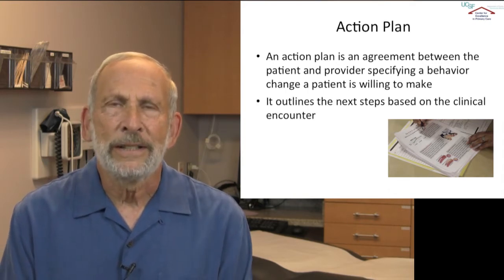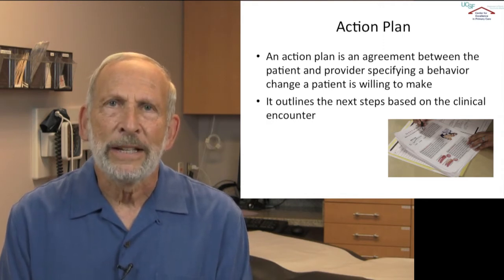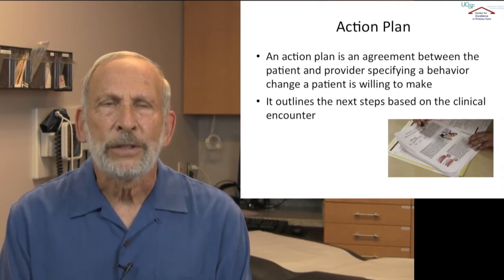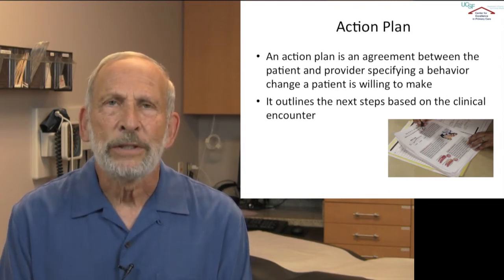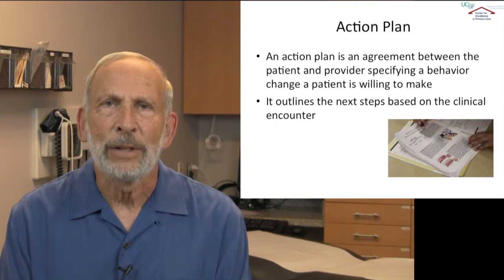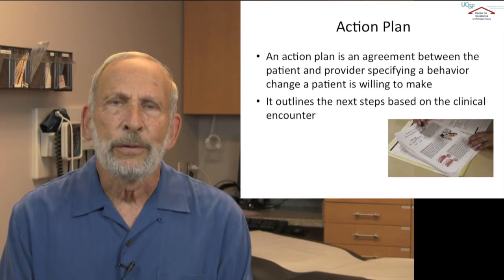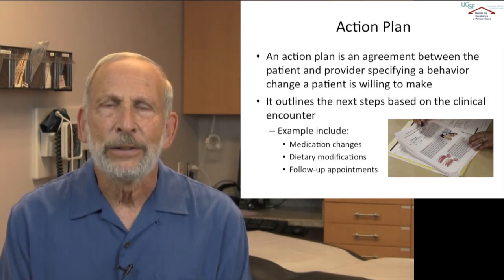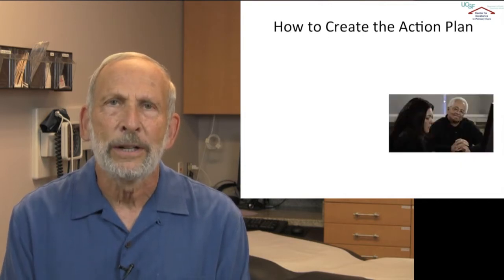Let's take the example again: a patient has diabetes and they eat a pint of ice cream every day. Let's do an action plan with that patient. You start out with step one, and there are five steps to action plans. Step one is a general area that the patient wants to work on. General areas might be healthy eating, physical activity, or taking your medications regularly. Let's say the patient chooses healthy eating.